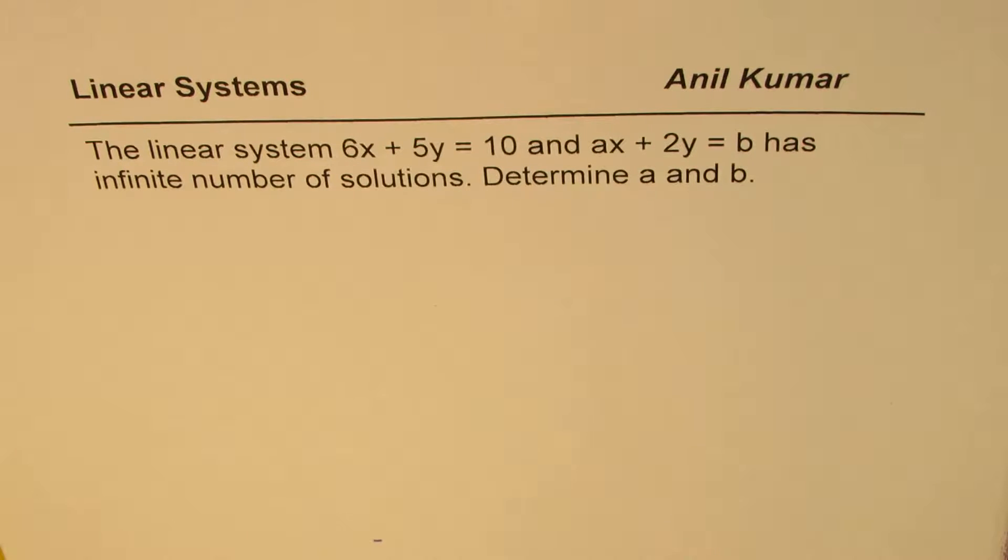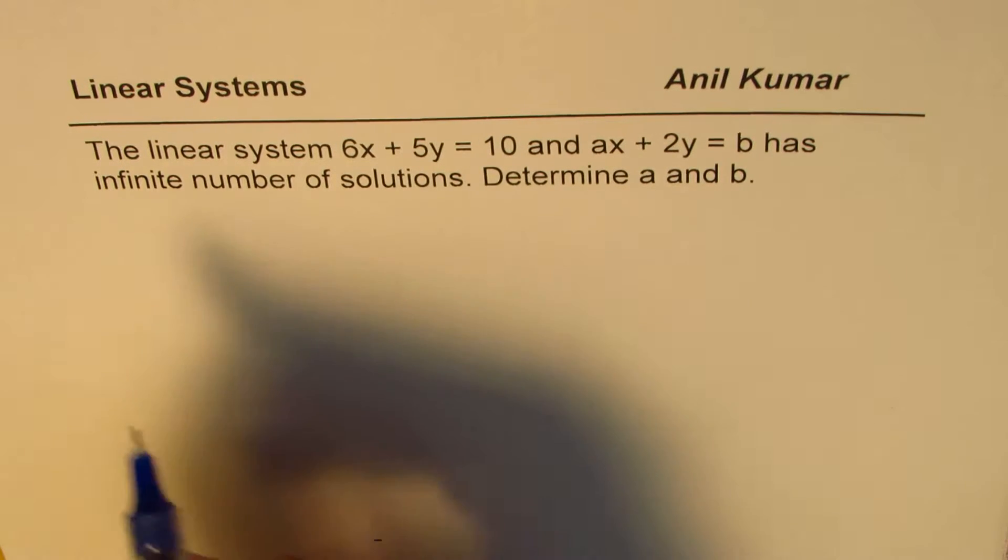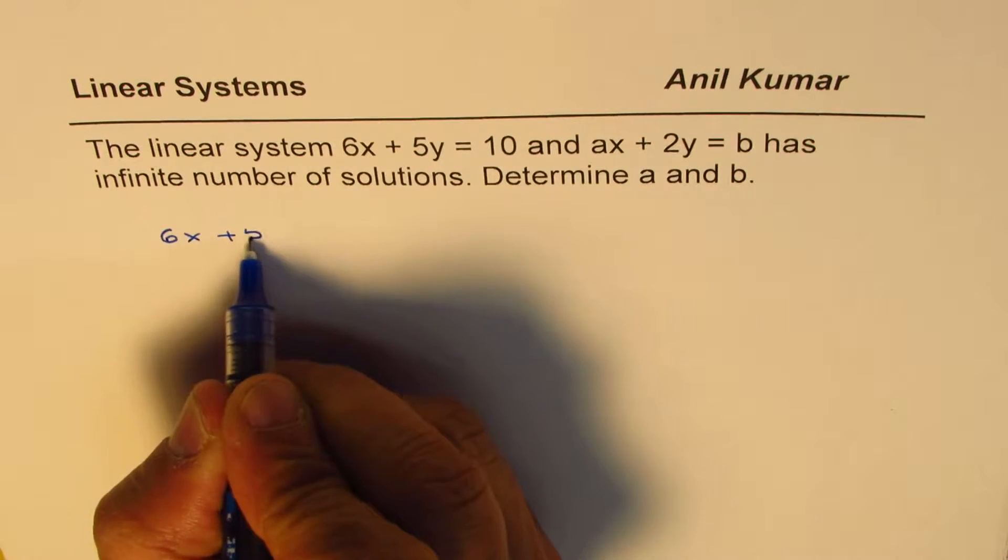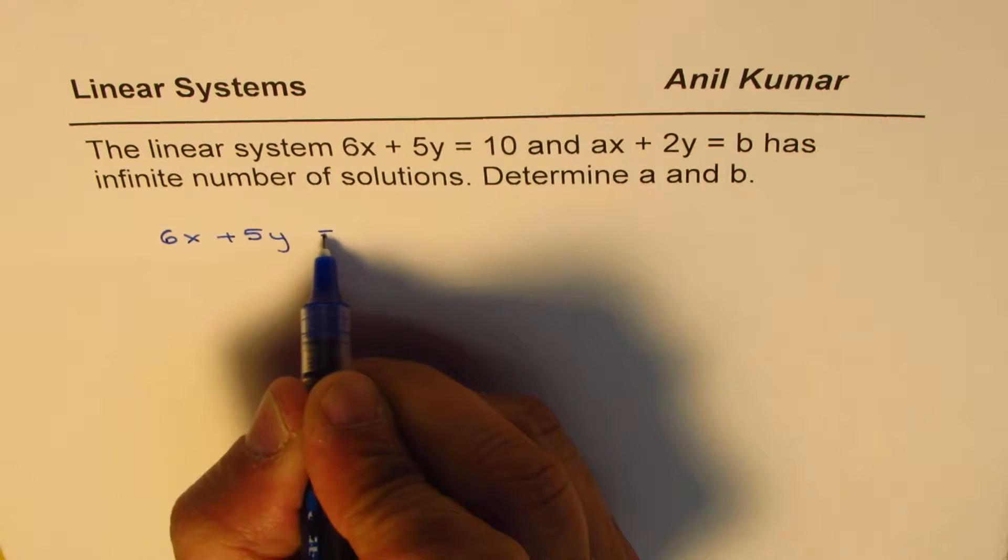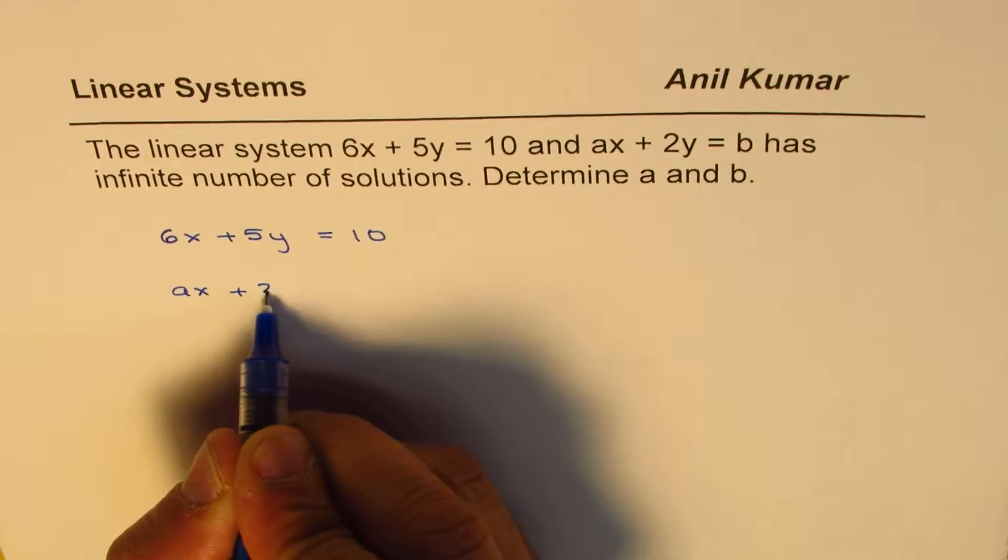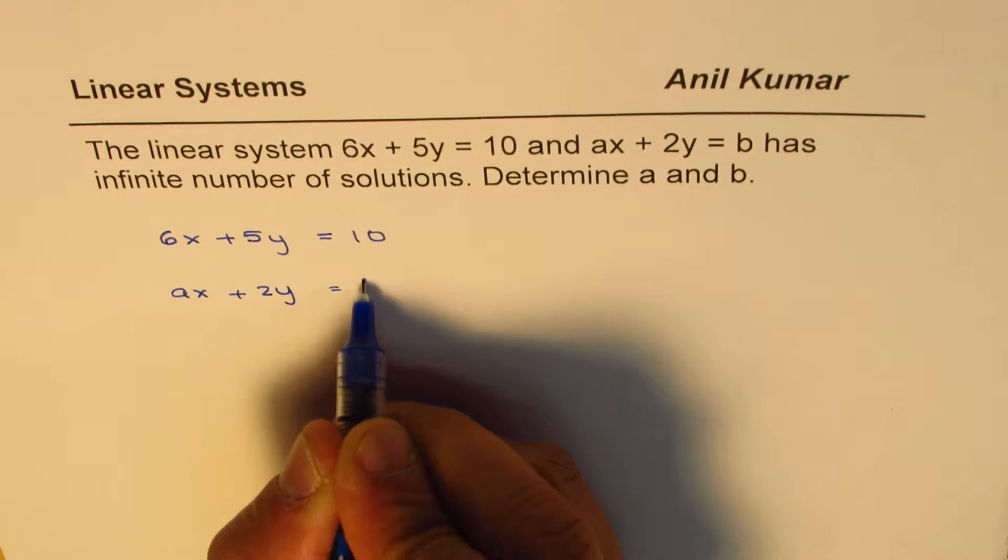You can always pause the video, answer the question, and then look into my suggestions. So we are given two equations: 6x plus 5y equals 10 and the other one is ax plus 2y equals b.